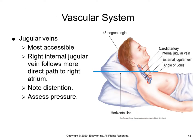This image demonstrates the position of a patient to assess jugular vein distension, commonly known as JVD. The internal jugular vein lies deeper along the carotid artery. The column of blood inside the internal jugular vein serves as a manometer and reflects the pressure in the right atrium. The higher the column, the greater the venous pressure. Raised venous pressure reflects right-sided heart failure.